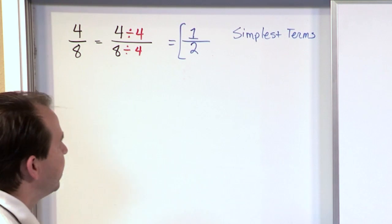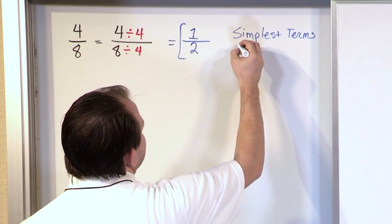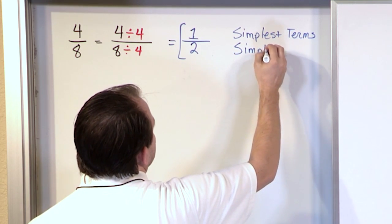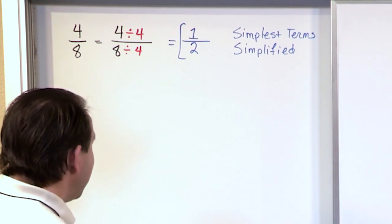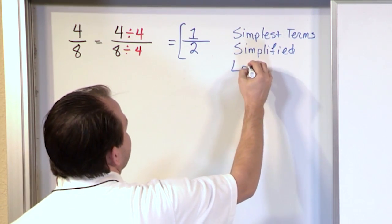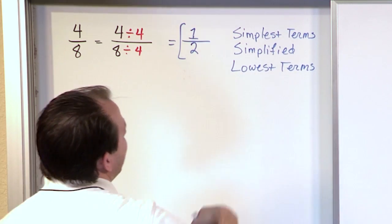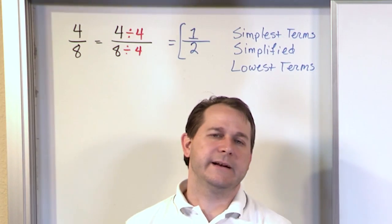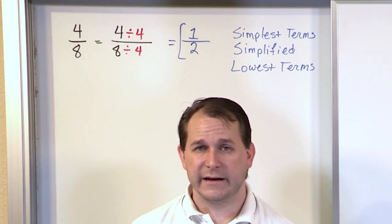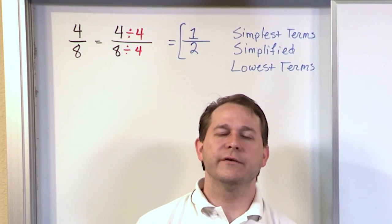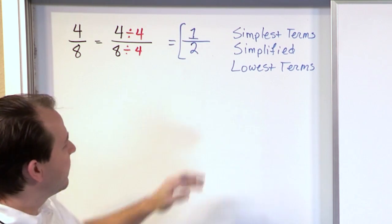You might see on a test: 'put the fraction in simplest terms.' You might also see 'simplify the fraction' or 'lowest terms.' It's important to understand that all three of these terms mean the same thing. Whether someone asks for simplest terms, lowest terms, or to simplify — they're all saying the same thing: divide the fraction by something to give you something simpler.